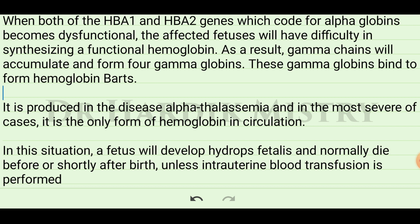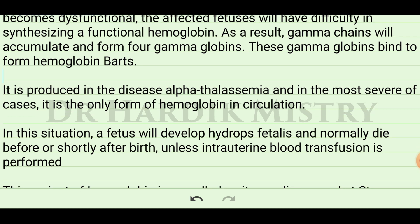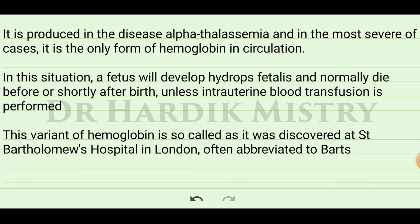In the most severe cases of alpha thalassemia, only hemoglobin Barts is present in the circulation. In this situation, a fetus will develop hydrops fetalis and will normally die before or shortly after birth unless intrauterine blood transfusion is performed. This variant of hemoglobin is called hemoglobin Barts because it was discovered at St. Bartholomew's Hospital in London, often abbreviated to Barts.